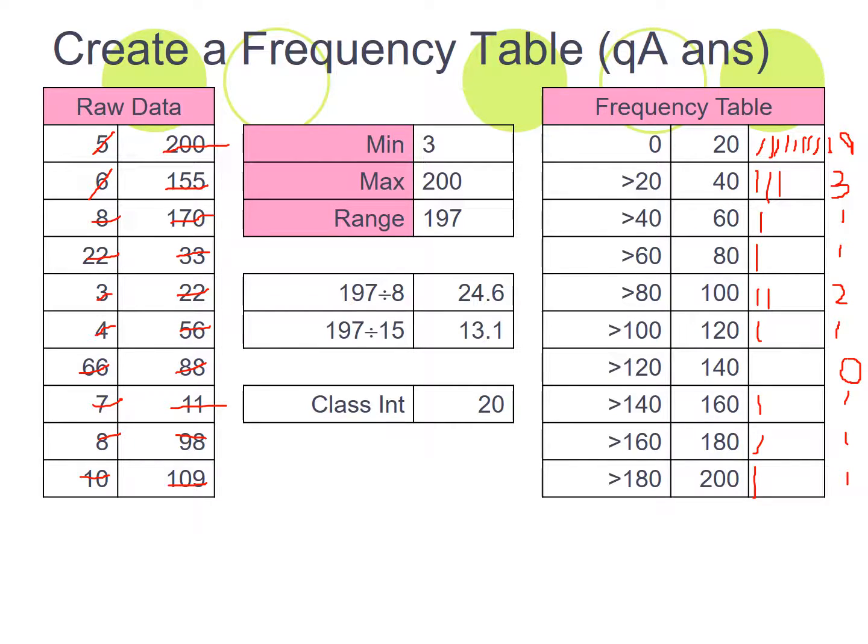And we go back to our raw data and we count them off. So 2, 4, 6, 8, 10, 12, 14, 16, 18, 20. There are 20 pieces of data and I've 20 pieces of data out here. So they tally.